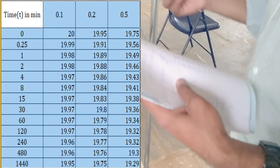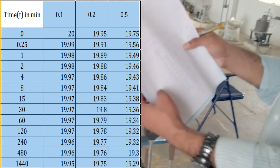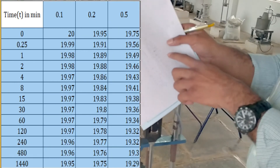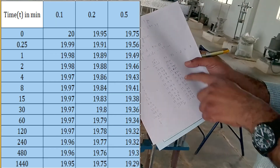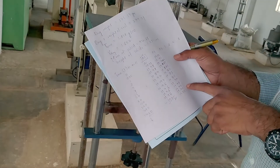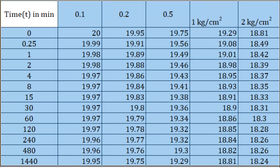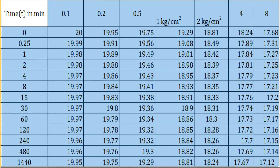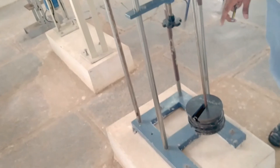The same procedure has to be followed: take deformation readings with respect to time for each load. We go through 0.1, 0.2, 0.5, 1, 2, 4, and 8 kg per centimeter square — all readings have to be captured. We have now completed the loading up to 8 kg per centimeter square.